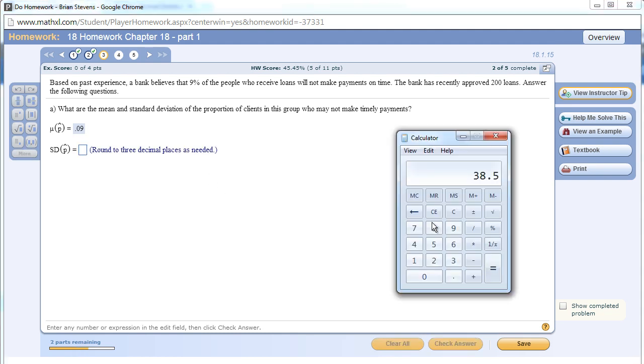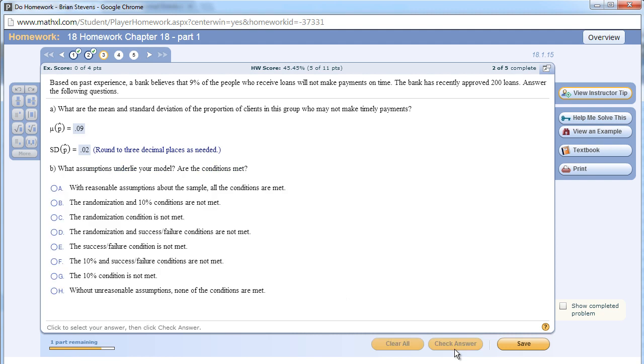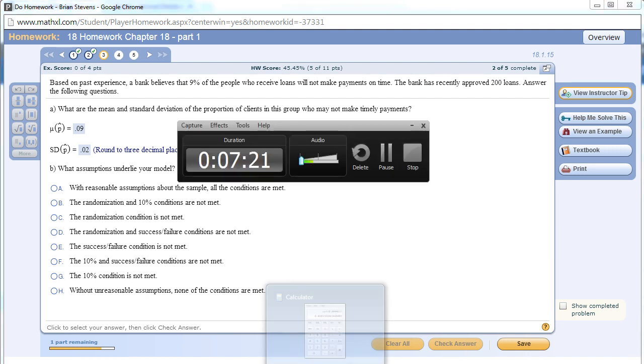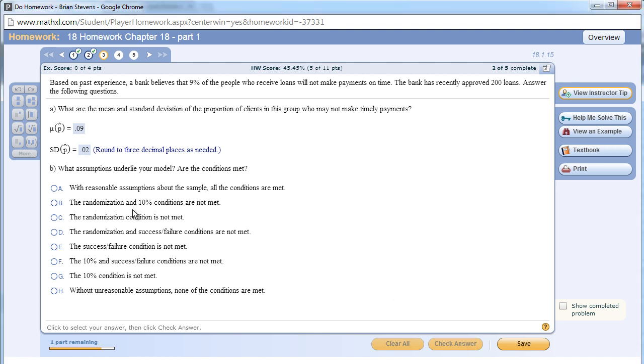Going on further, we need to get the standard deviation again. P times q over n, square root. Remember, p times q over n, which is 200, and then square root. So we get about 2%, round to three decimals, so 0.02. It looks like they're randomly selecting people. We can check the success failure condition: 0.09 times 200, we get 18, and then the other one would be 182. This passes the success failure condition. We might assume they're randomized, and this is less than 10% of all loans.